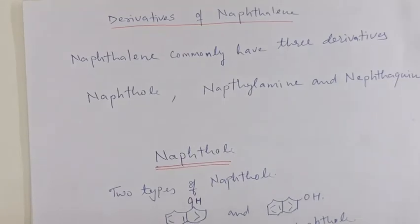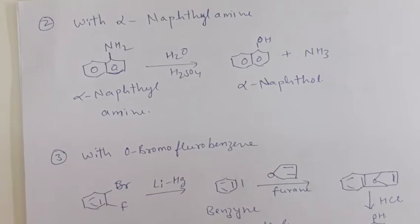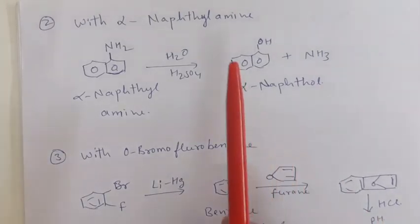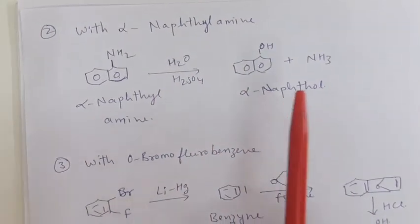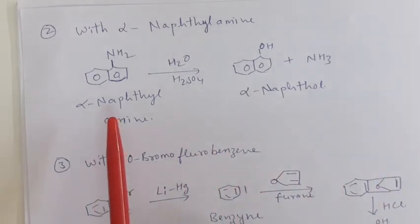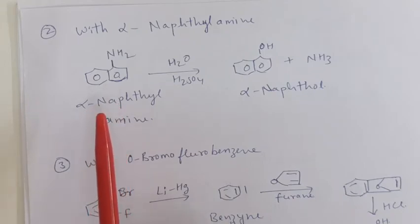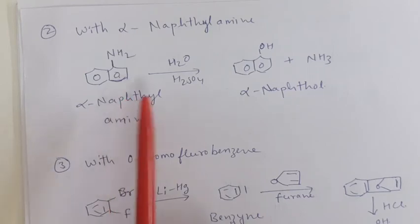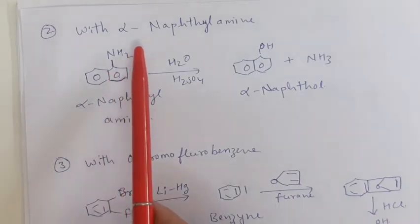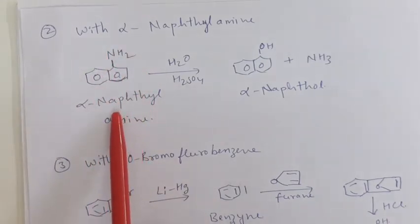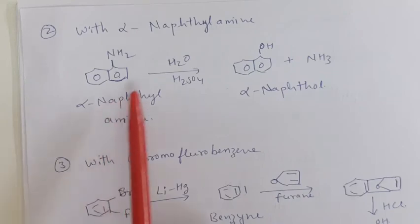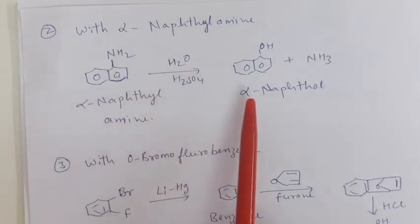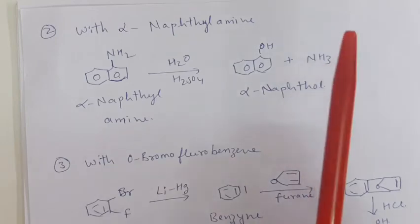Another synthesis of naphthol is via alpha naphthylamine. If we take alpha naphthylamine then we get the alpha naphthol. This alpha naphthylamine can be obtained by the reduction of nitronaphthalene. Naphthalene reacts with nitric acid to give nitronaphthalene. The nitronaphthalene on reduction gives alpha naphthylamine. This alpha naphthylamine on hydrolysis in the presence of acid gives alpha naphthol and ammonia is evolved.